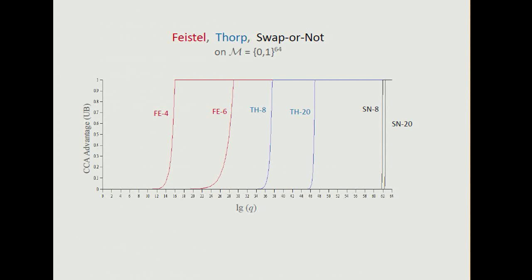Next, it's 8 passes of the Thorp shuffle, where a pass is defined as N rounds, or 64 rounds. Then 20 passes of the Thorp shuffle. And over on the right, we have 8 passes of swap-or-not and 20 passes.